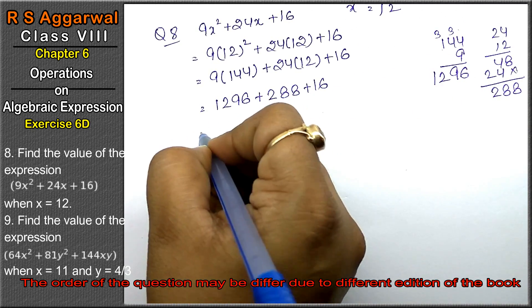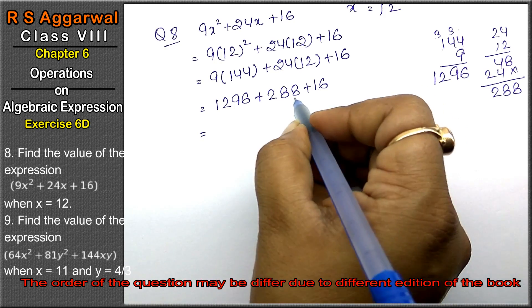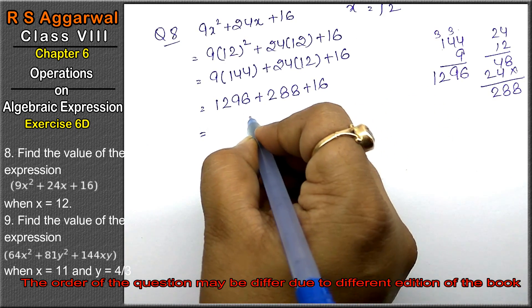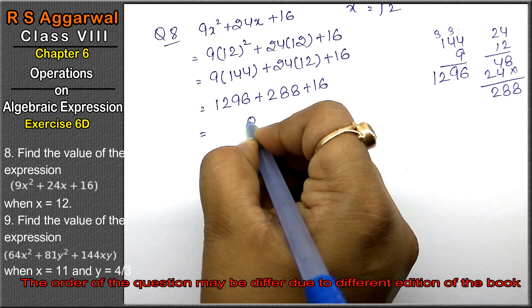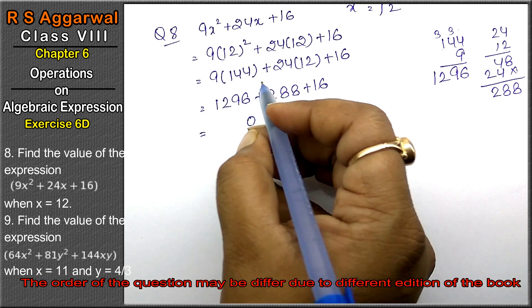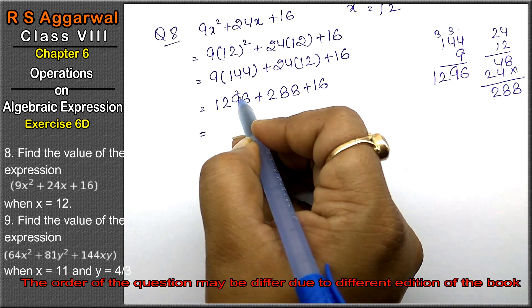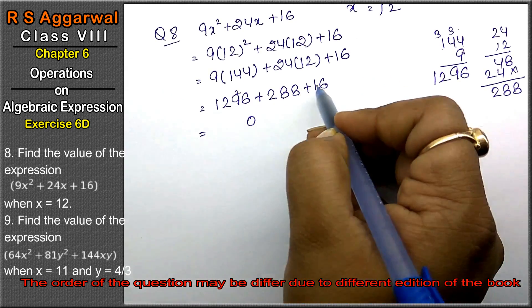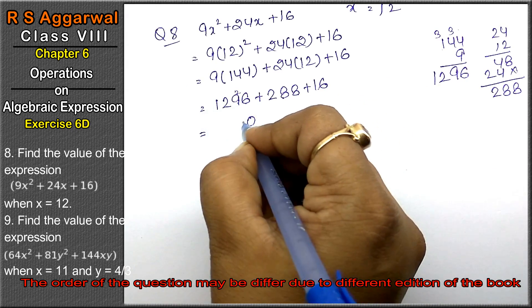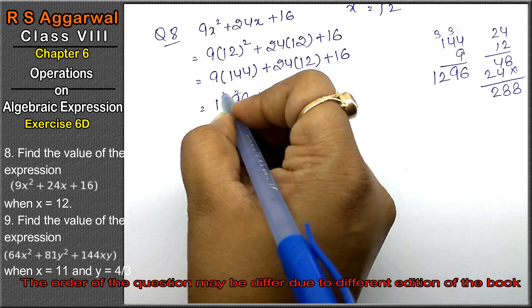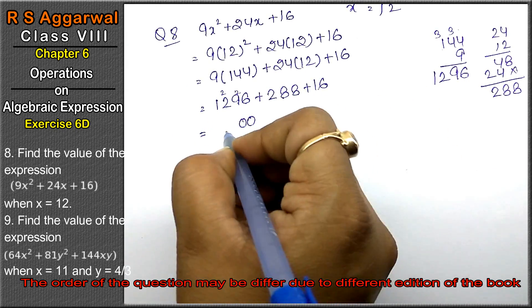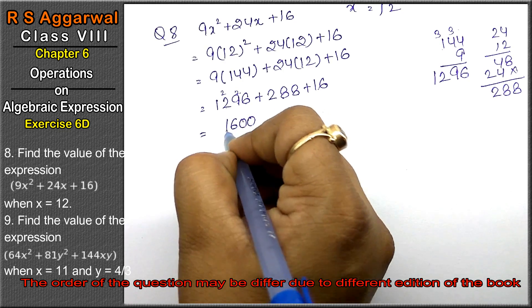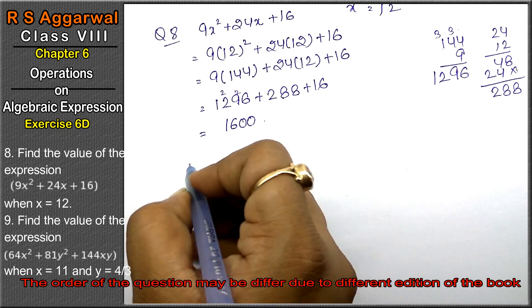So we have 1296 + 288 + 16. Adding: 6 + 8 + 6 is 20, carry 2. Continuing the addition gives us the final answer of 1600.